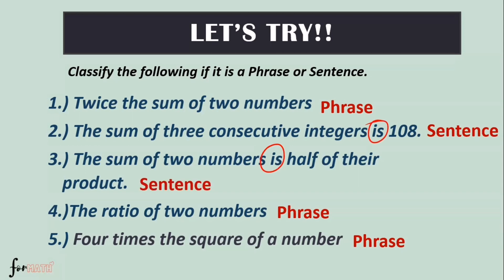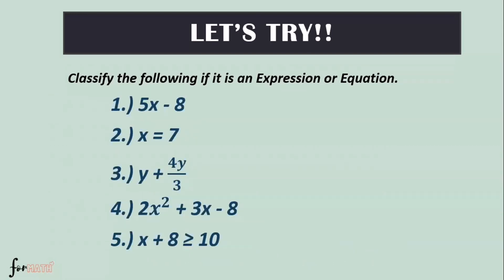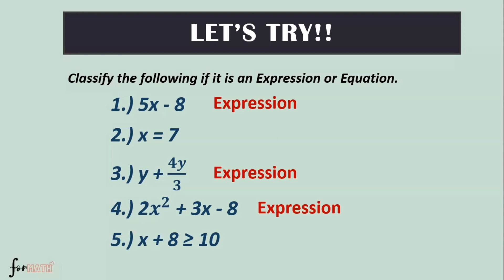Now let's classify the following as expression or equation. Number 1: 5x minus 8 — expression. Number 2: x equals 7 — equation. Number 3: y plus 4y over 3 — expression. Number 4: 2x squared plus dx minus 8 — expression. Number 5: x plus 8 greater than or equal to 10 — equation. So numbers 1, 3, and 4 are expressions, while numbers 2 and 5 are equations. That is the difference between expression and equation — when we say equation, it is the mathematical sentence.